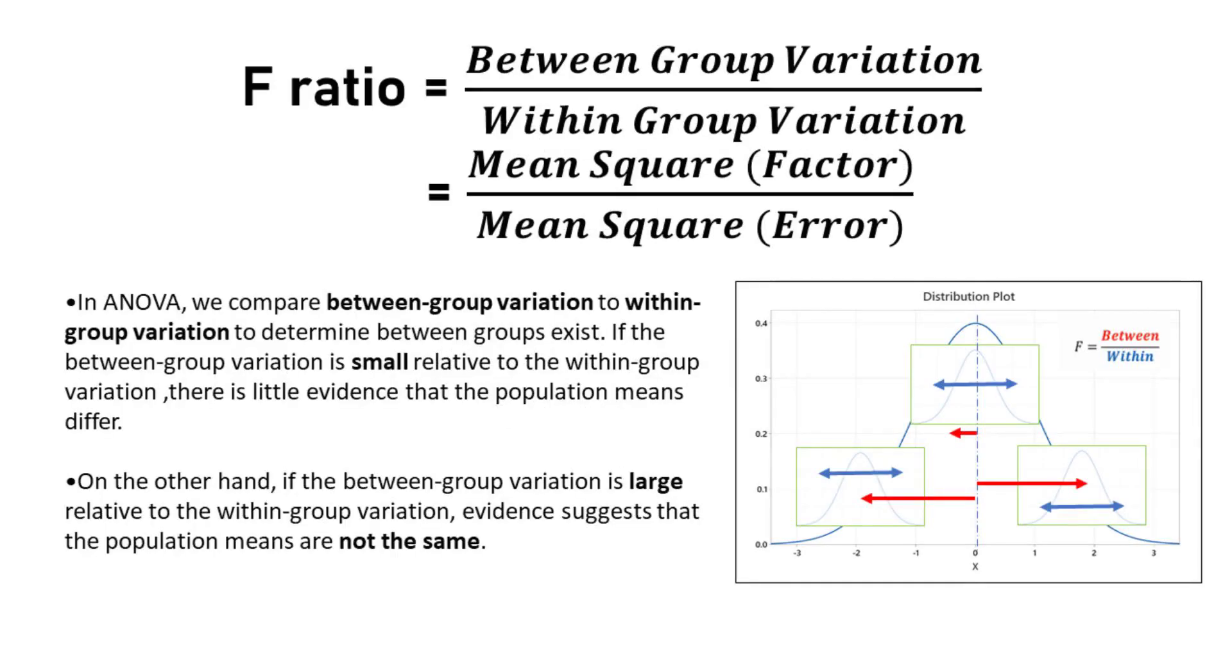In ANOVA, we compare between-group variation to within-group variation to determine if differences between groups exist. If the between-group variation is small relative to the within-group variation, there is little evidence that the population means differ. On the other hand, if the between-group variation is large relative to the within-group variation, evidence suggests that the population means are not the same.